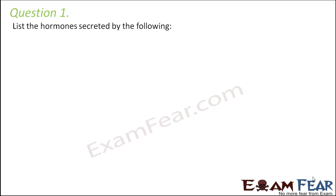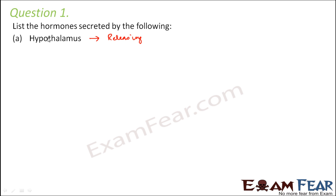Question number one: list the hormones secreted by the hypothalamus. The hypothalamus secretes two types of hormones — releasing hormones and inhibiting hormones. The releasing hormones tell the pituitary to release its hormones, while the inhibiting hormones tell the pituitary to stop releasing any more hormones. These are the two types of hormones secreted by the hypothalamus.